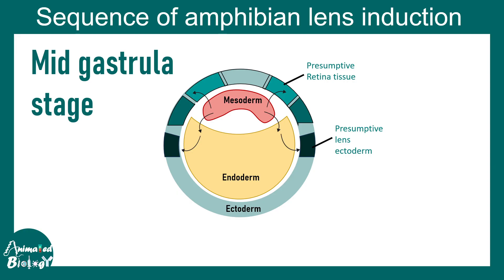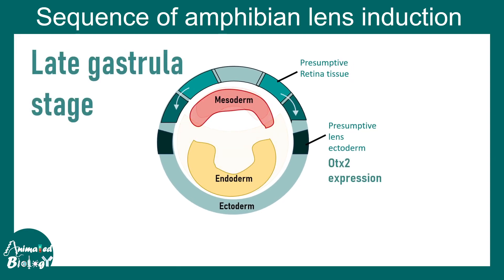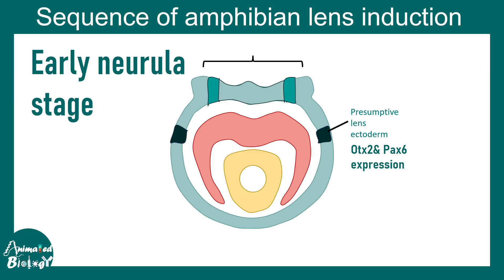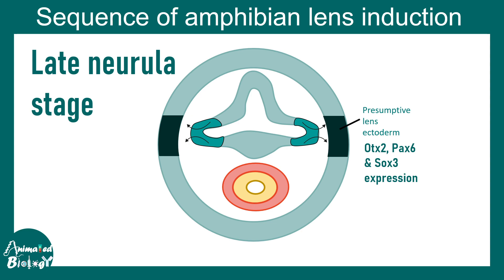It all starts in the mid-gastrula stage, where there is a presumptive lens ectoderm destined to become the lens. You can see the mesoderm in red, endoderm in yellow, and ectoderm in light green. In the late gastrula stage, specific competence factors begin appearing in the presumptive lens ectoderm. By the early neurula stage, OTX2 and PAX6 are highly expressed, defining this presumptive lens ectoderm. These molecular factors work like a licensing key enabling the ectoderm to eventually become a lens.